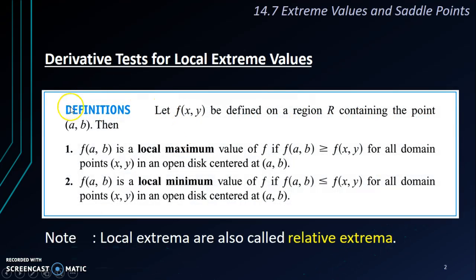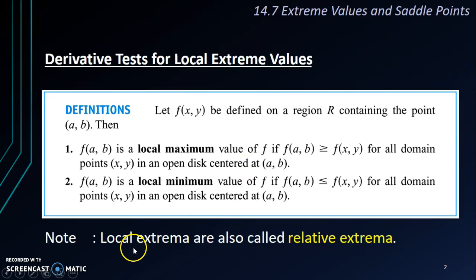Let's take a look at the definition of what it means by local maximum and local minimum. You can read it on your own, but I'm going to show you using a diagram because a picture paints a thousand words. What I want to highlight is that local extrema are also called relative extrema. Sometimes we see them called local extremum, maximum, minimum, or maxima, minima, extrema.